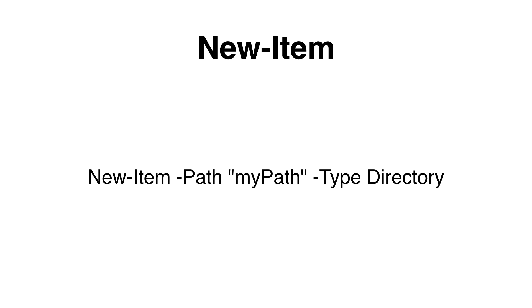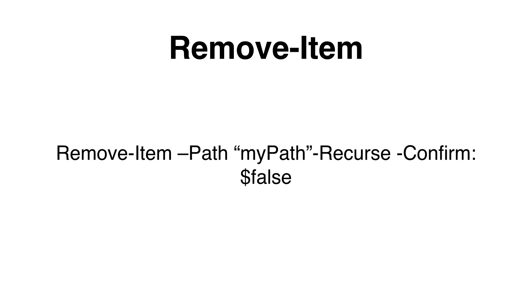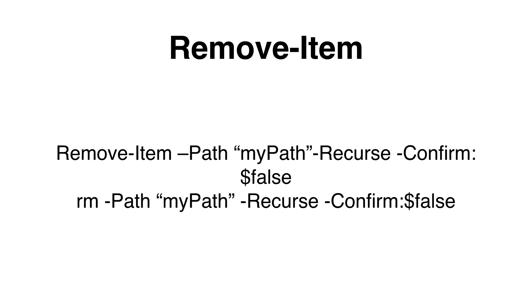If we need to create a directory we can use the New-Item commandlet. We need to specify the path where we would like to create the directory and set the type to directory so that PowerShell knows we want to create a directory. If we want to delete or remove a directory we can use the Remove-Item commandlet. We need to specify the path of the directory we would like to delete. Since it's a directory and it may have files or subfolders within it, we need to specify the recurse property and to avoid confirmation popups we specify confirm with false. The alias for Remove-Item is rm, so we can just specify rm to avoid extra typing.